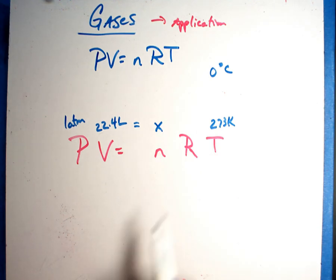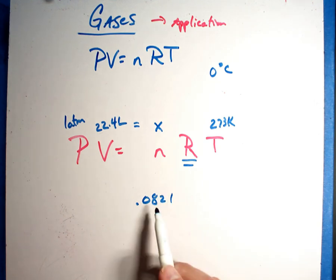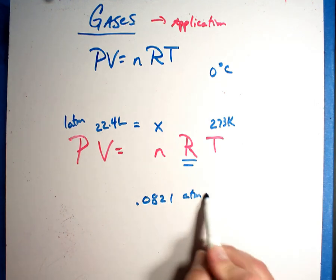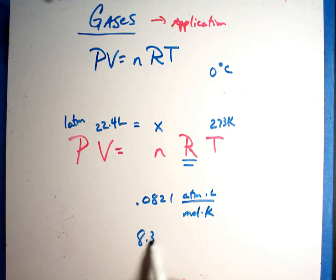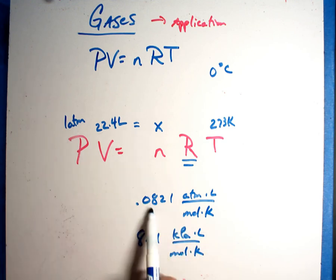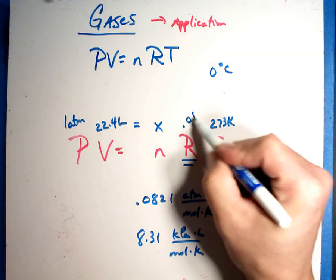Well, first of all, you have two values for R. You can use 0.0821, which is atmospheres times liters over mole times Kelvin, or 8.31 kilopascals times liters over mole times Kelvin. You'll notice since this is in atmospheres, I want to use this number, 0.0821.